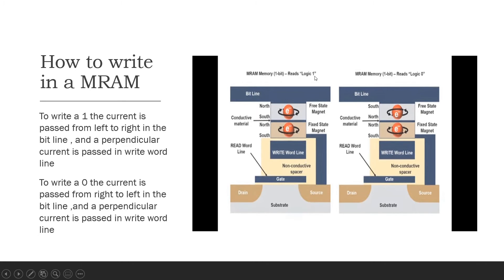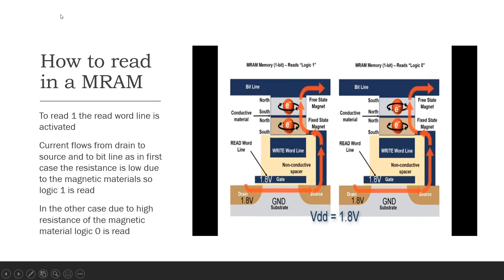Before we go and discuss about how to write in an MRAM, we shall see how to read. So in this configuration, just consider this: this is the fixed state and this is the free state. Both are aligned. What will happen is if I enable the read word line, then the current flows. As these both are aligned in the same rotation, the rotation of the electrons are aligned. So this has low resistance. The current easily passes through this configuration and it's seen at the bit line which is read as Logic 1.